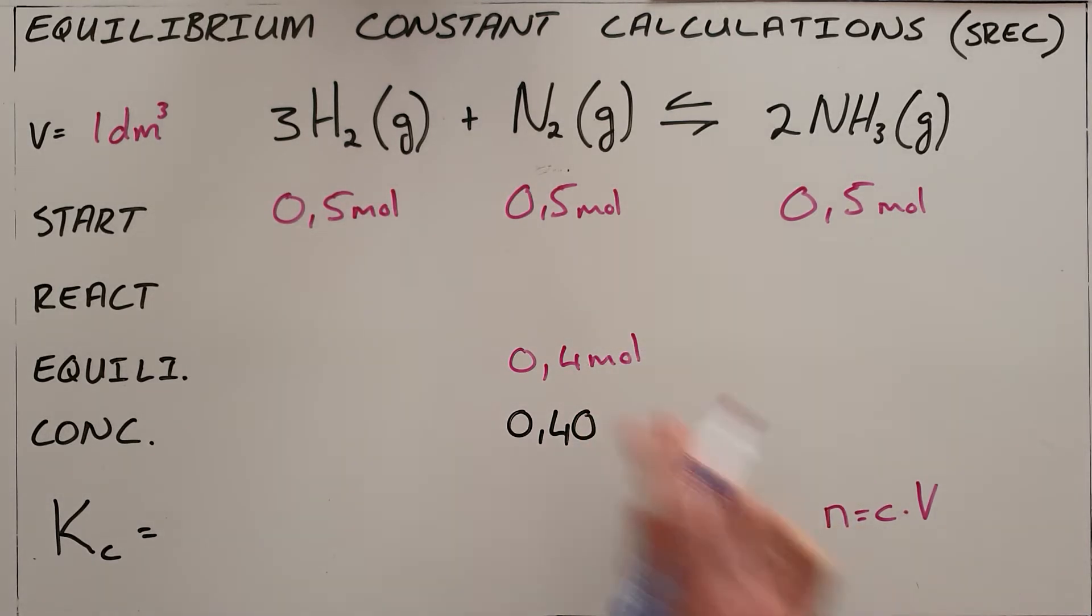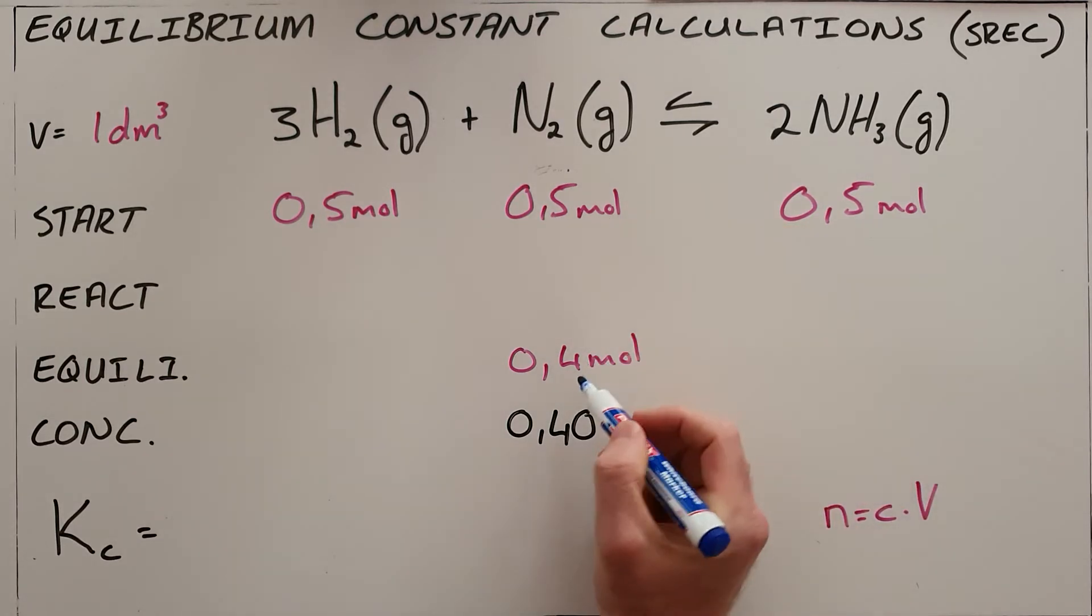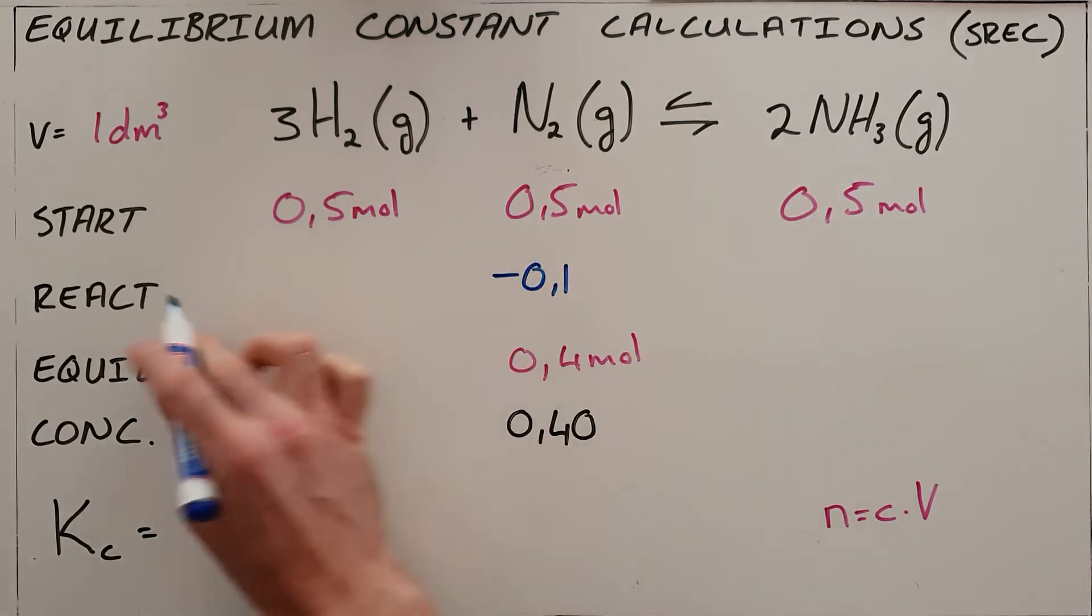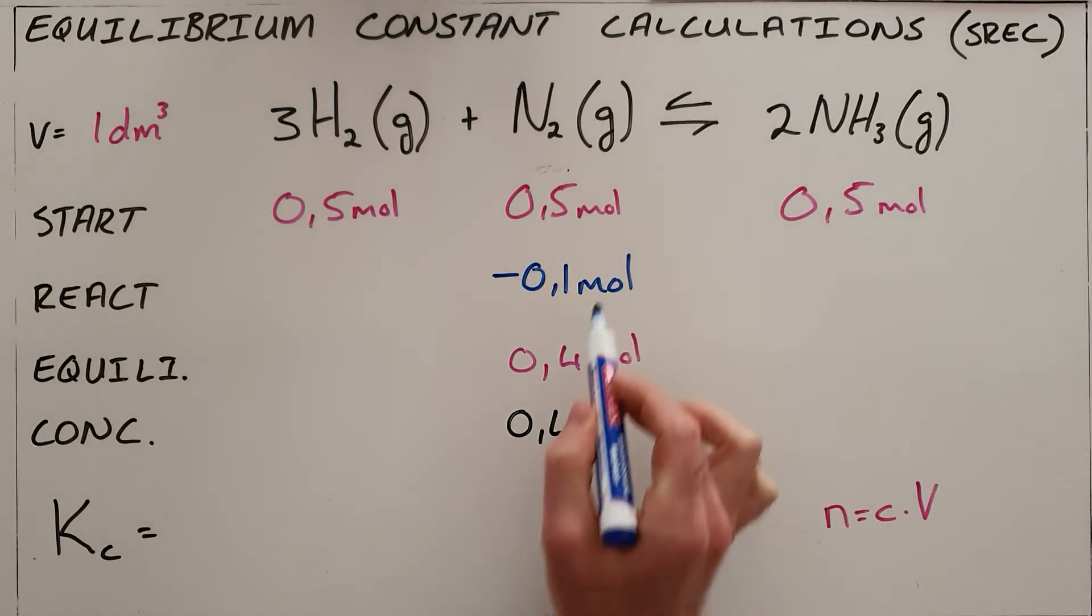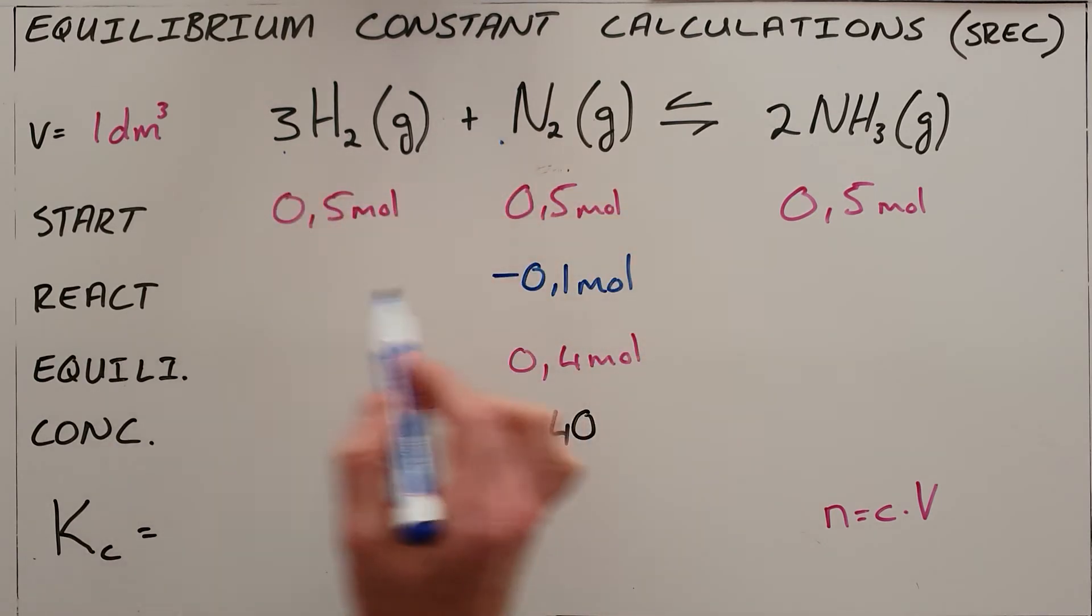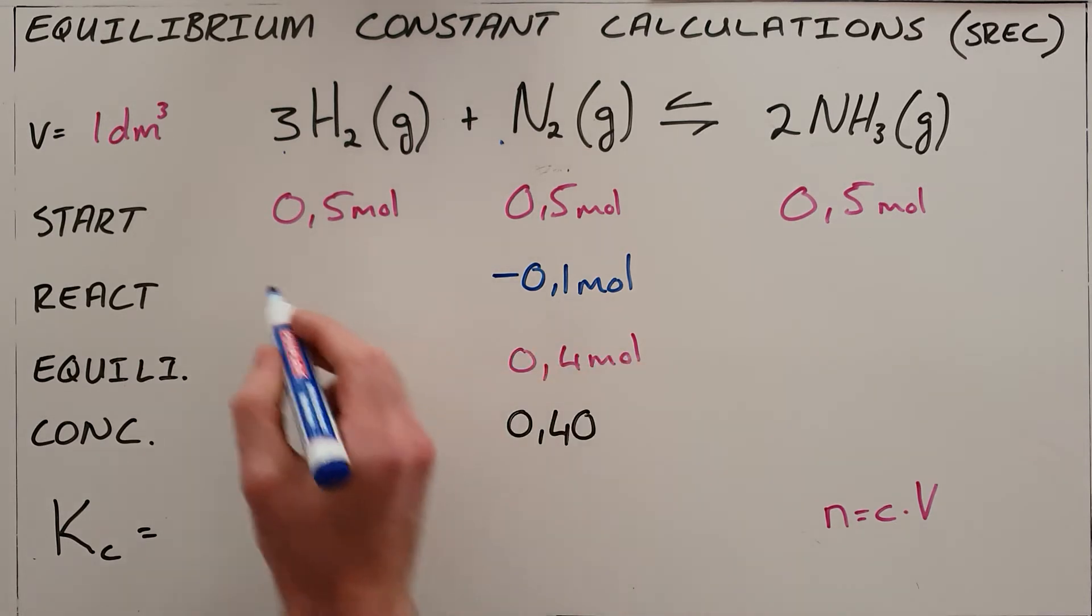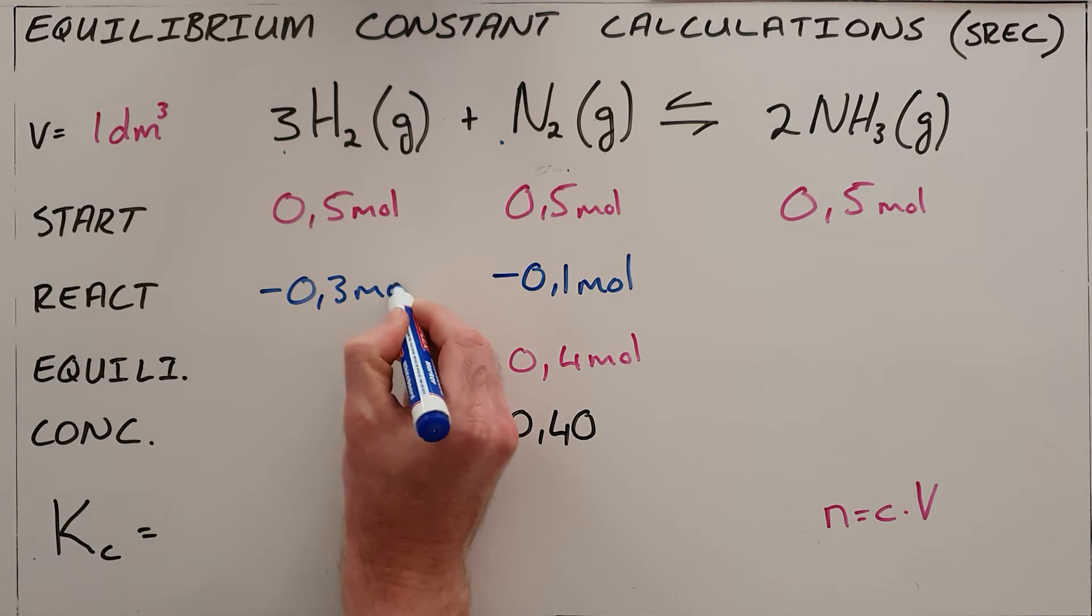Now once we've got this SRAC table set up, we can now say since we understand that if we started with 0.5 moles of nitrogen and ended with 0.4, we must have used up or reacted 0.1 moles of nitrogen. We can now also see that the ratio in which nitrogen reacts with hydrogen is one to three. So for every 0.1 moles of nitrogen that reacts, we must have reacted 0.3 moles of hydrogen.